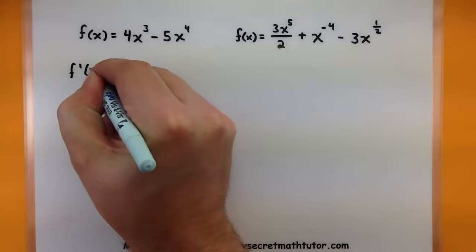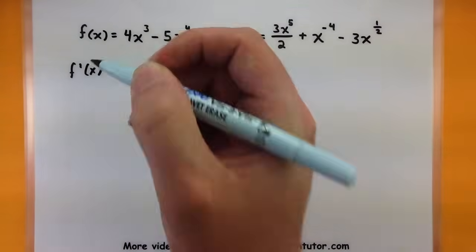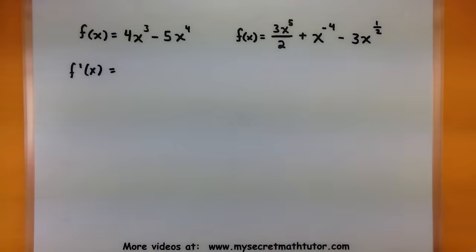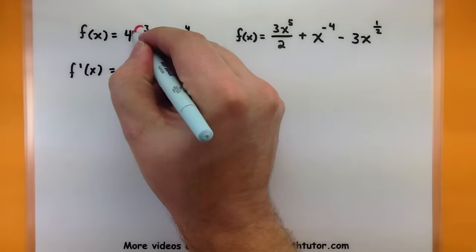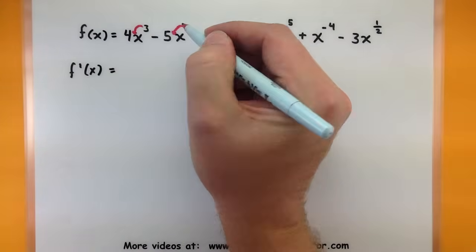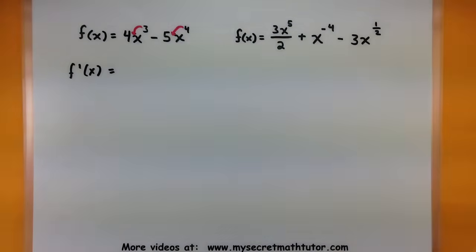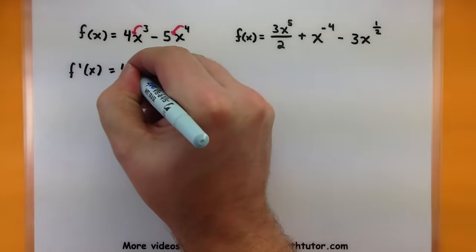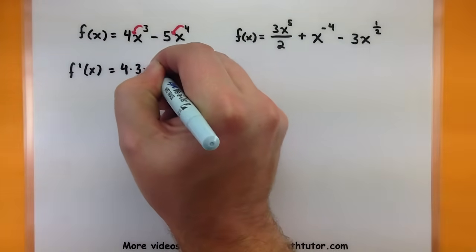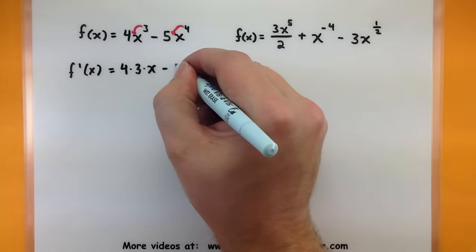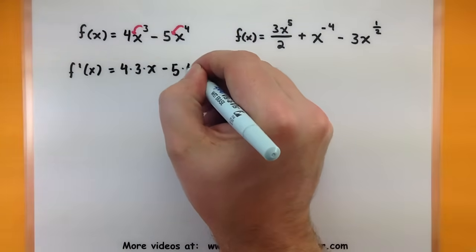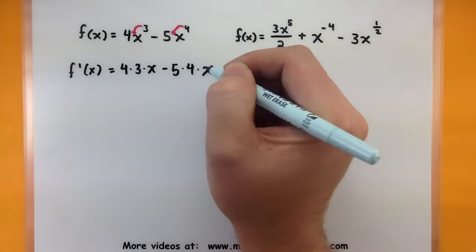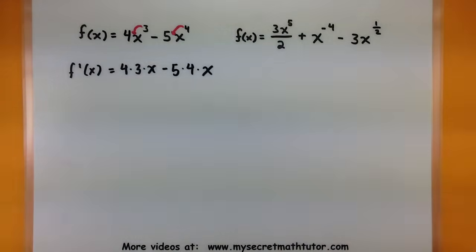Let's write out what we got. So f prime of x: we're going to drop down the three, put that right out front. Drop down the four, bring that right out front. This will give me 4 times 3 times x minus 5 times 4 times x.